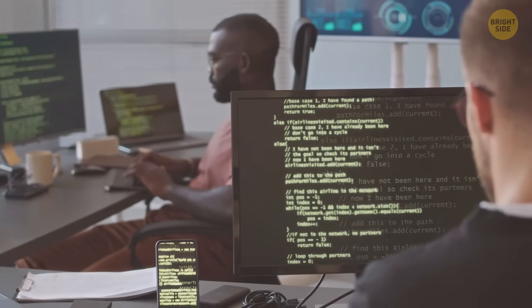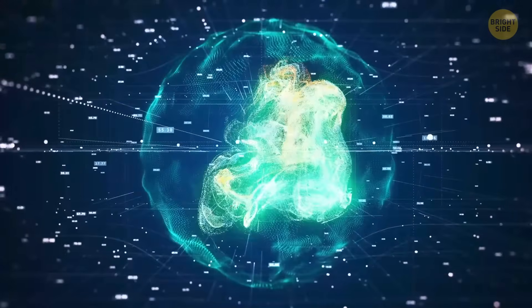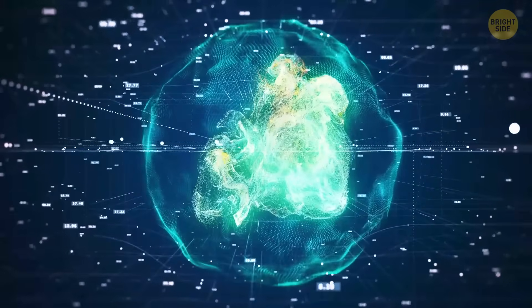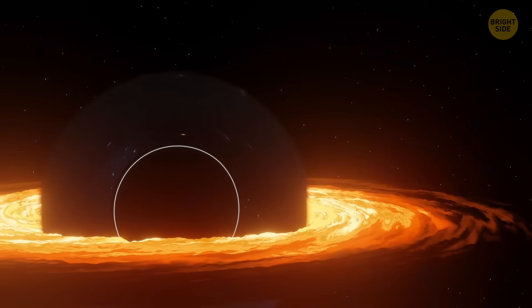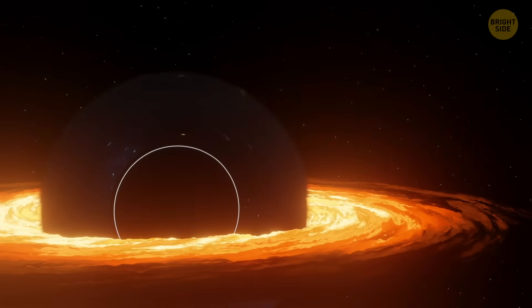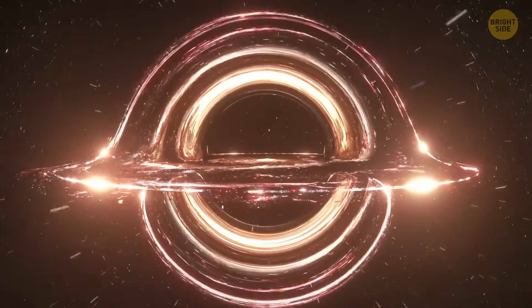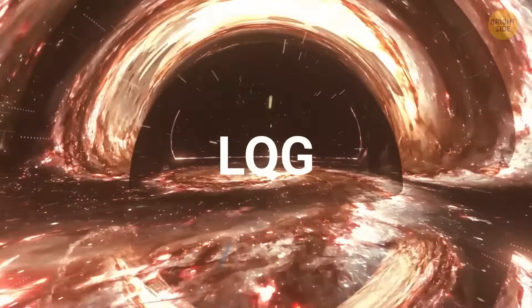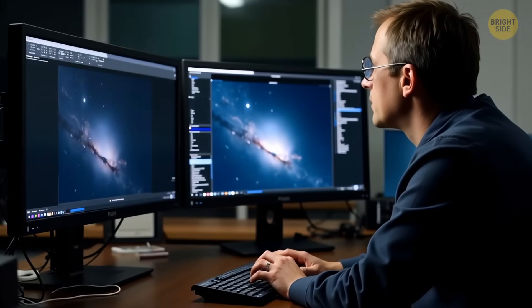Scientists have some theories, of course. They're not proven because, obviously, we can't really test them. But they give us a way to guess what might be happening inside a black hole. One of the most developed ideas is called Loop Quantum Gravity. It appeared in the late 1980s,